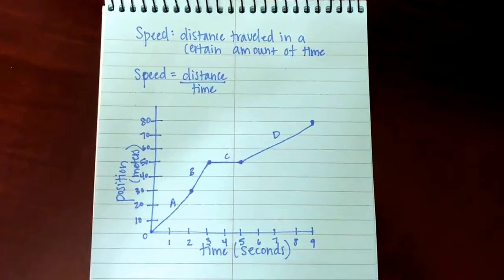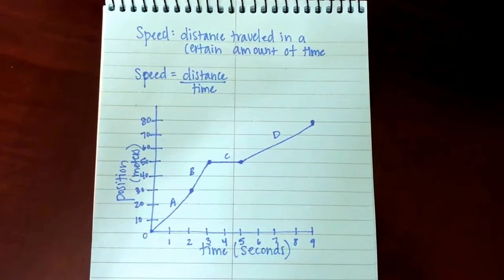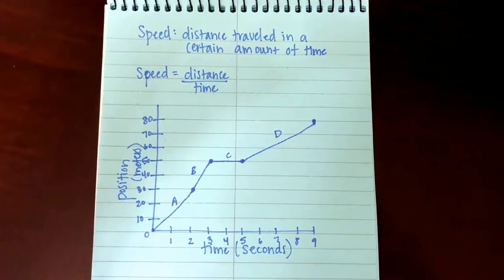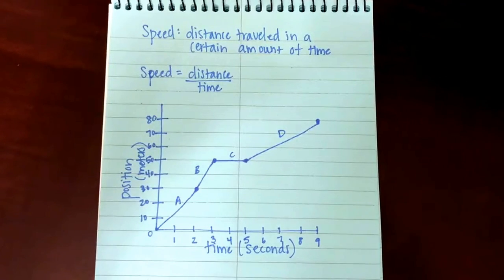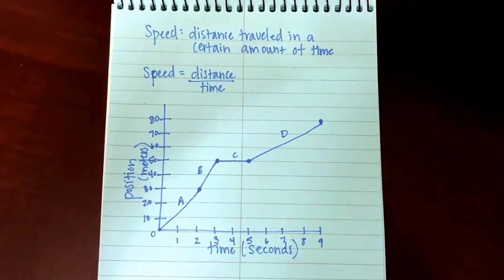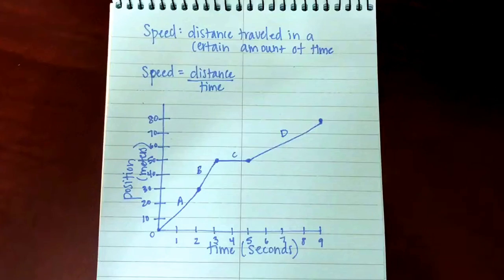Now we're going to practice calculating speed on a position versus time graph. Recall that speed is the distance traveled in a certain amount of time, and we calculate that by dividing distance by time.